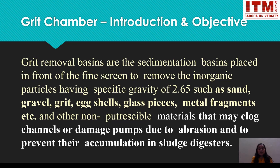The grit chamber is basically a settling tank. Grit removal basins are sedimentation basins placed in front of the screen to remove inorganic particles having a specific gravity of 2.65 — more than water — such as sand, gravel, grit, egg shell, glass pieces, and metal fragments. They also remove non-putrescible material that may clog channels or damage pumps due to abrasion, and prevent their accumulation in the sludge digester.